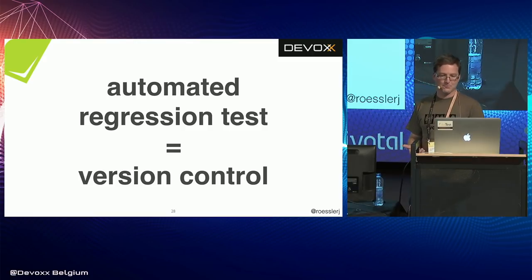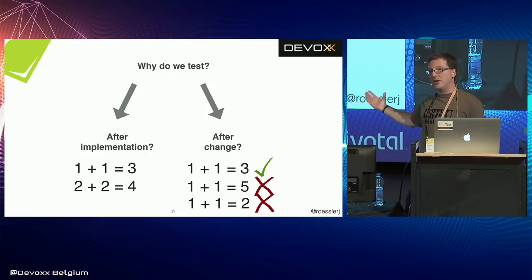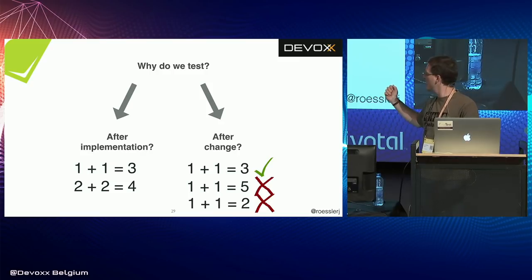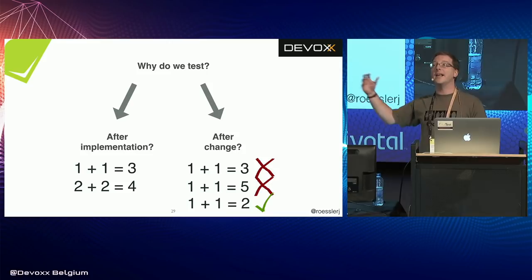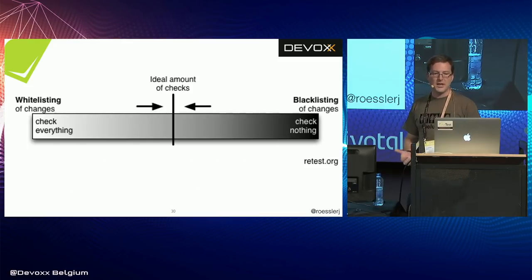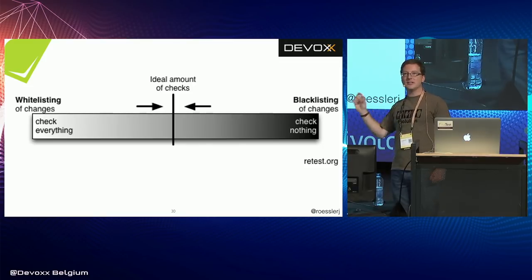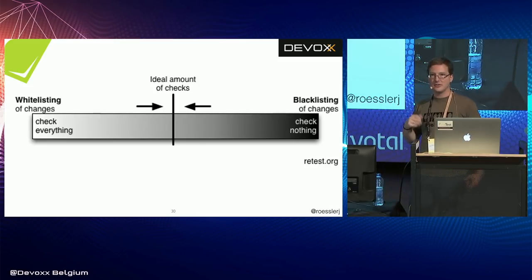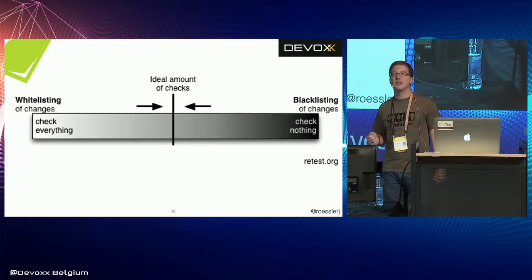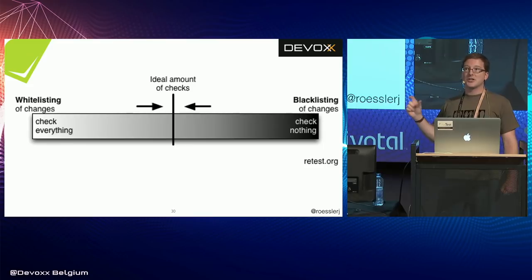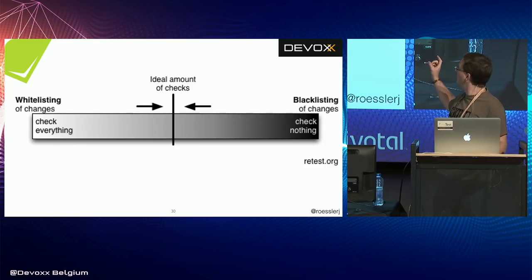Even if you want to fix a known bug that customers have relied on for five years, you still want to make sure nothing else breaks — that's still version control. Whenever you create a test with an assertion, you are blacklisting a change: you're saying this thing cannot change without you noticing. And when you notice, you might even decide the change is correct — maybe you intentionally adopted the software — but at least you want to know.